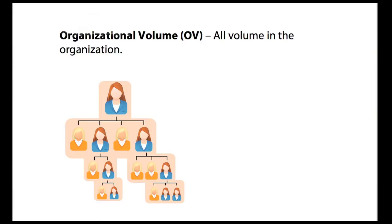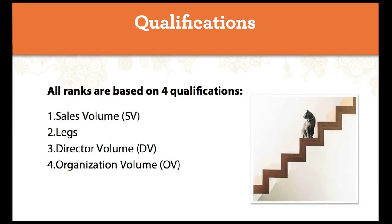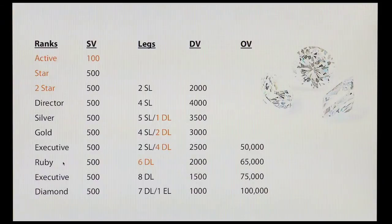Then we have something called organizational volume — that's all volume in your organization, all the way to the bottom. Those are the four qualifications for heritage makers. Let's look at what we call the career path, the ranks, and how you qualify at each rank.